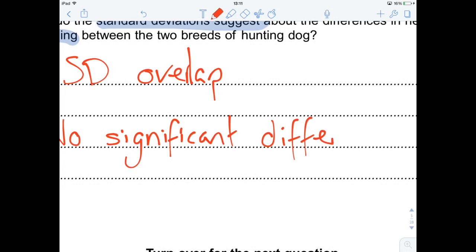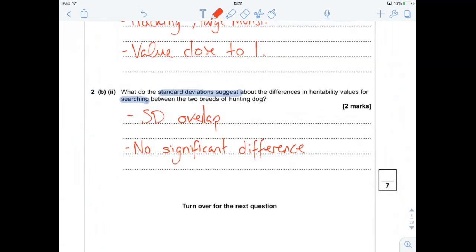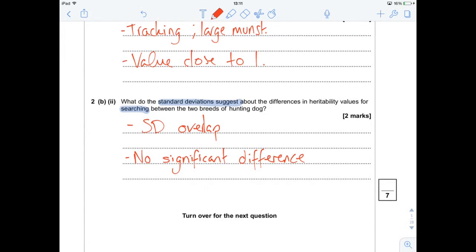So always be aware that if standard deviations overlap, there is no significant difference. If they do not overlap, then there is a significant difference. That was question two. Please check out my standard deviation video if you need more of a hand with that. But for now, thanks very much for watching. Let's give ourselves seven out of seven. Like, comment and subscribe and stay tuned for video three, question three.